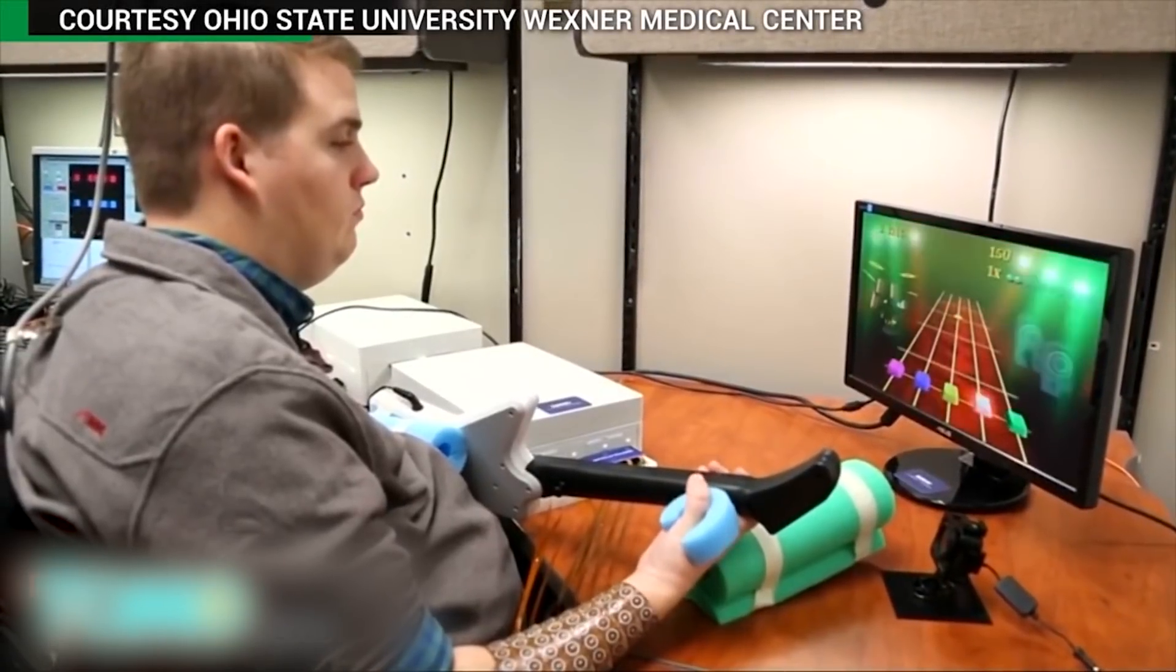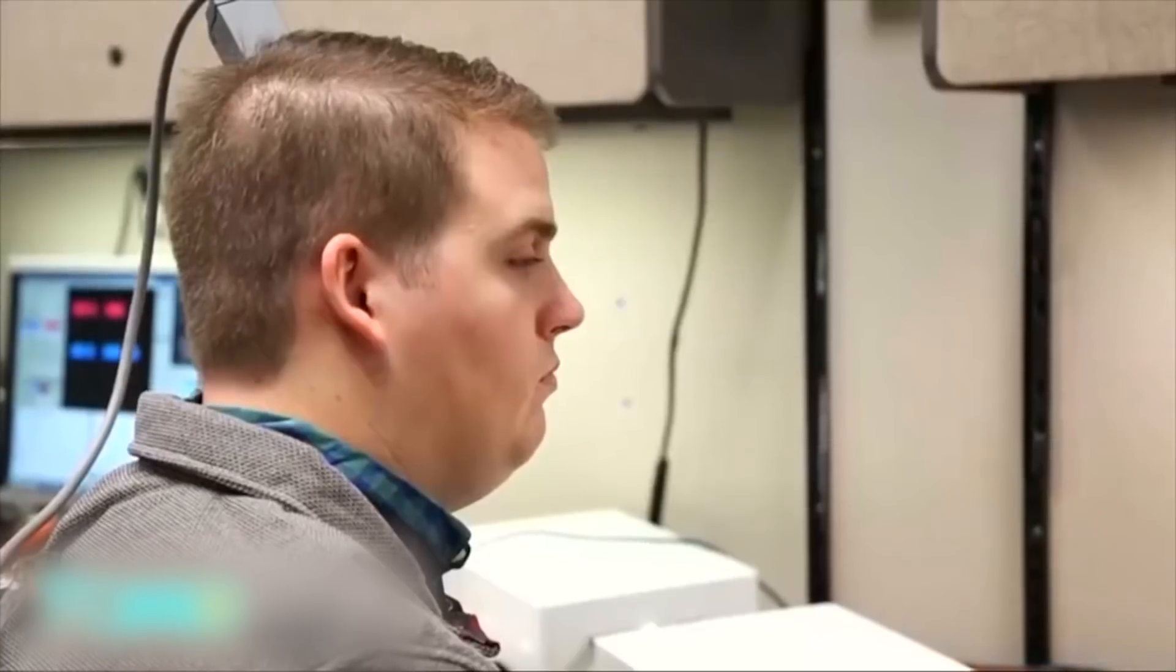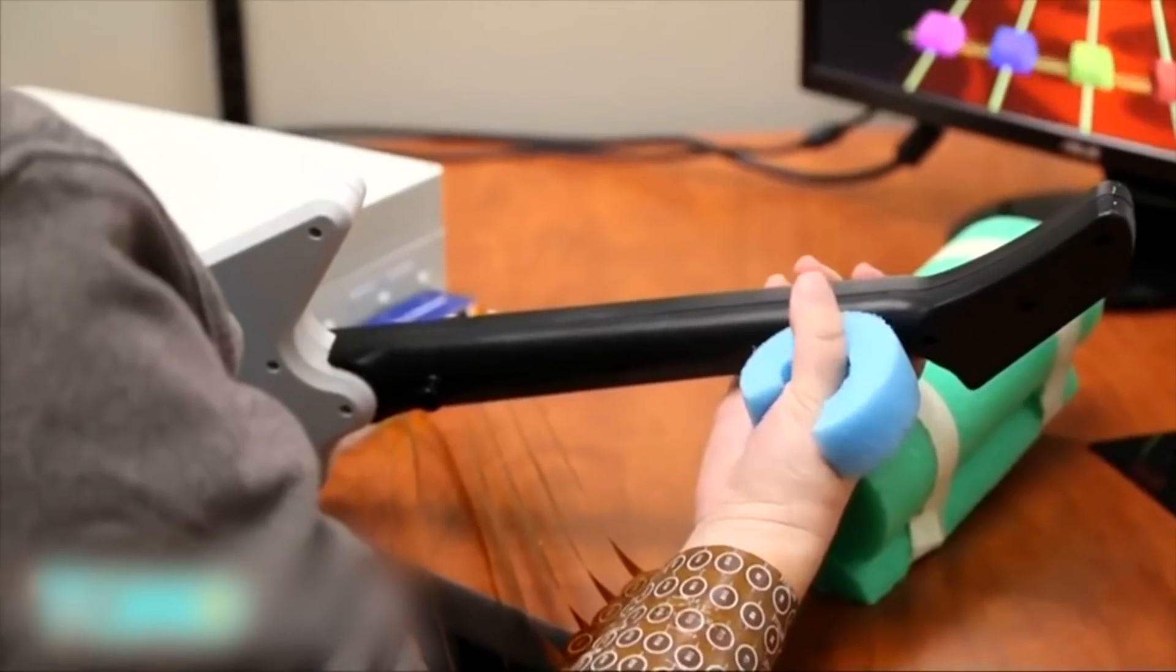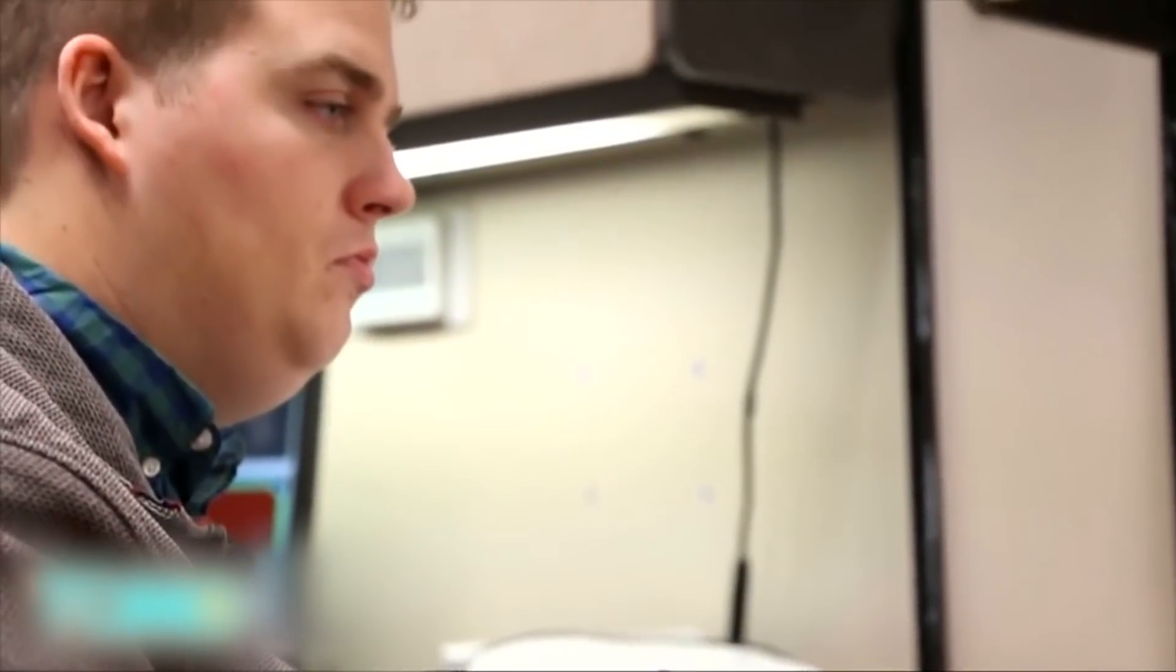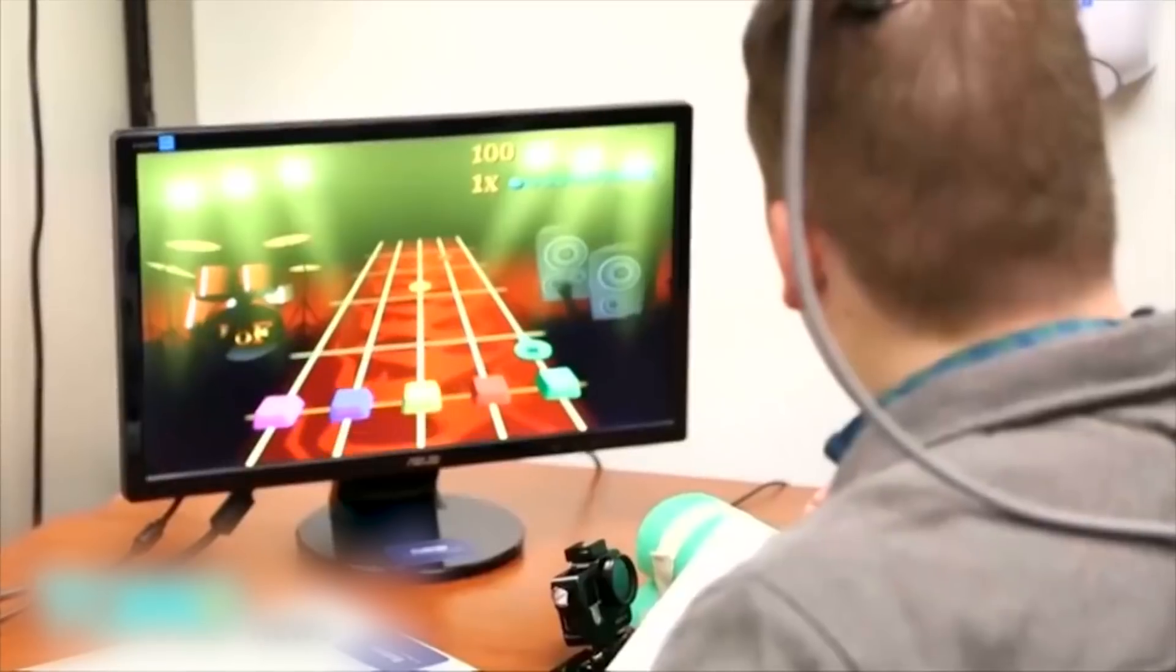The system, called NeuroLife, has allowed Burkhart to make six different hand and wrist motions. It marks the first time a paralyzed man has been able to regain movement using recorded brain signals.